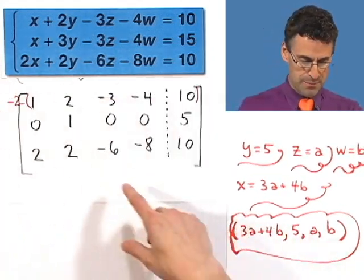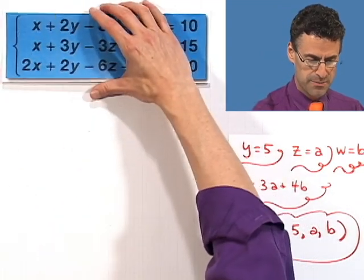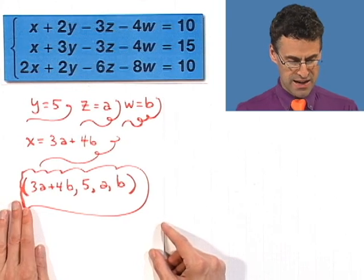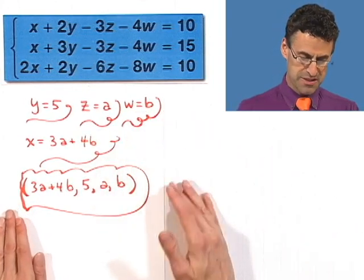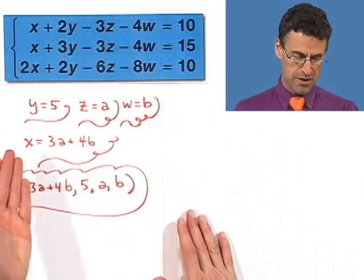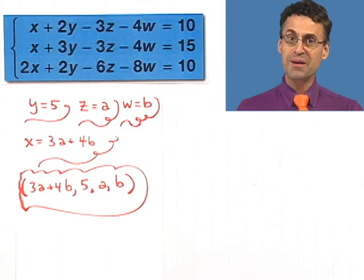And we found it by writing the corresponding augmented matrix that goes with the system, and then doing the elementary row operations to the matrix, putting it in a triangular type form. And then all of a sudden realizing what variables can be thought of as free and using those, see which variables are dependent on the free variables and solving away. There you have it.